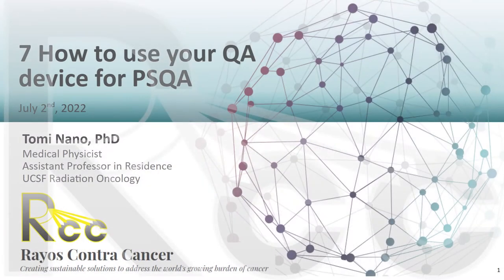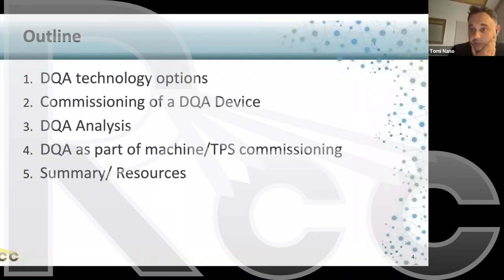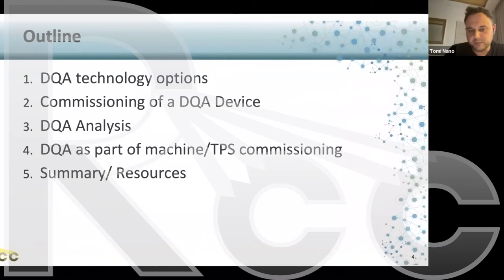We're going to talk about some DQA technology options — devices and common tools used in the clinic, how we commission those devices and ensure they are accurately measuring our treatment machine output, the analysis methods commonly used for patient-specific QA, and considerations in terms of acceptance, commissioning, and treatment planning system. We'll conclude with some summary resources, and these slides will be shared with everybody after the talk.